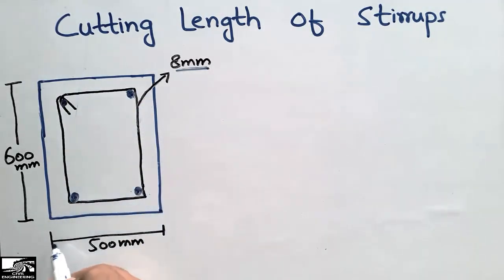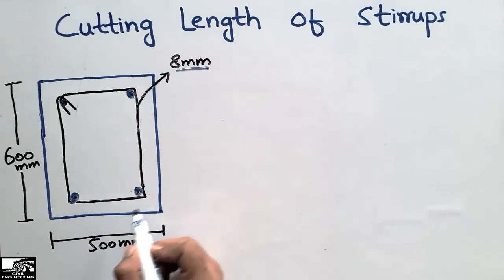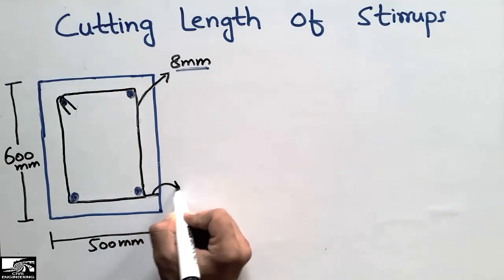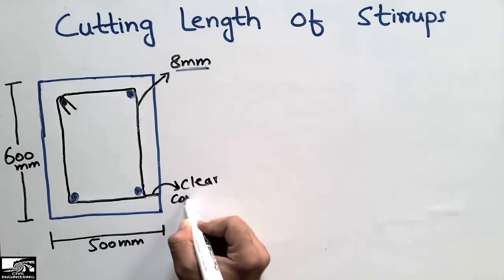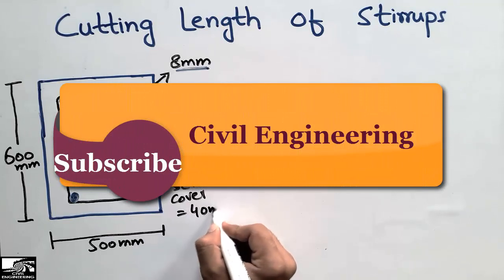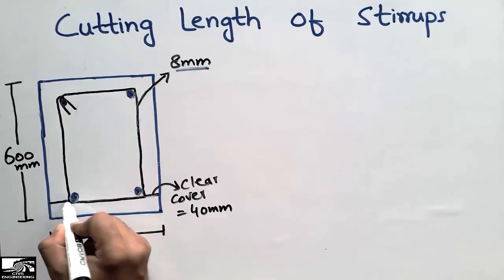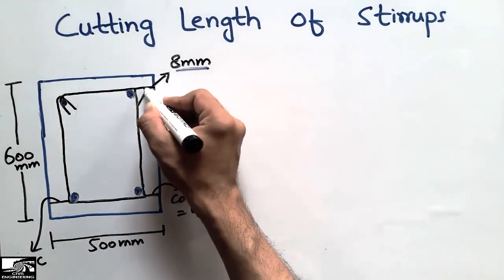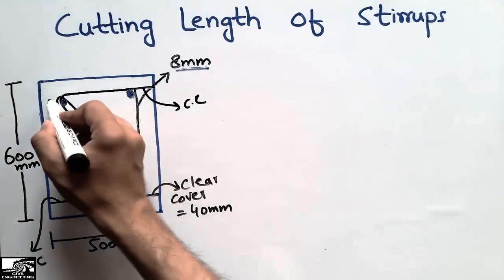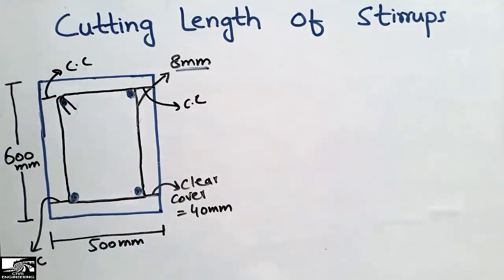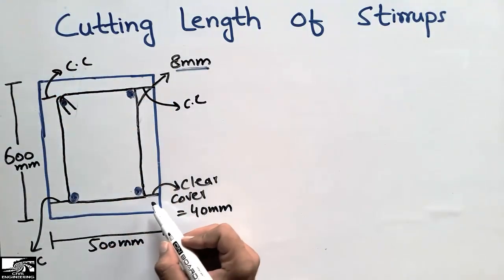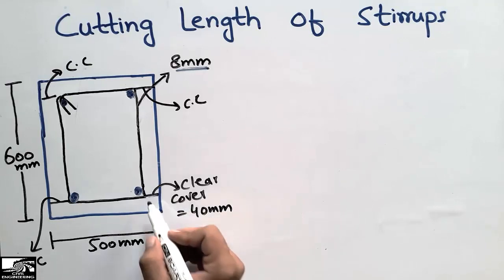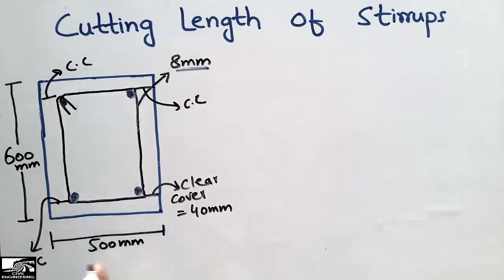The stirrups are supported by clear cover on all sides. The clear cover in a beam is usually 40 mm. This applies on all four sides — both in the width direction and the depth direction — so the stirrups are protected by the surrounding concrete.